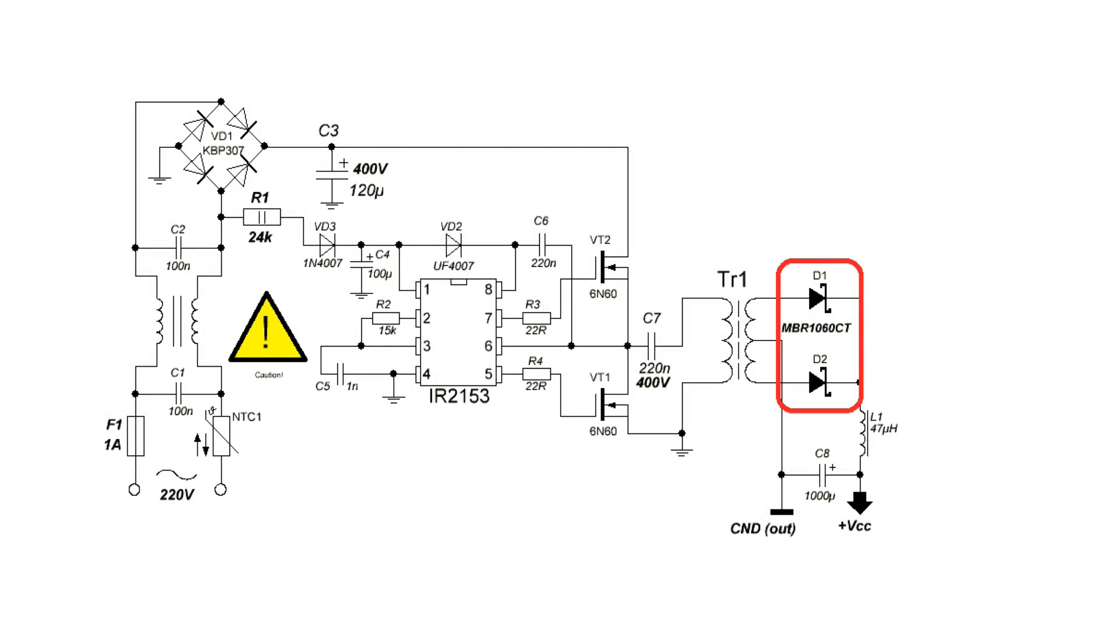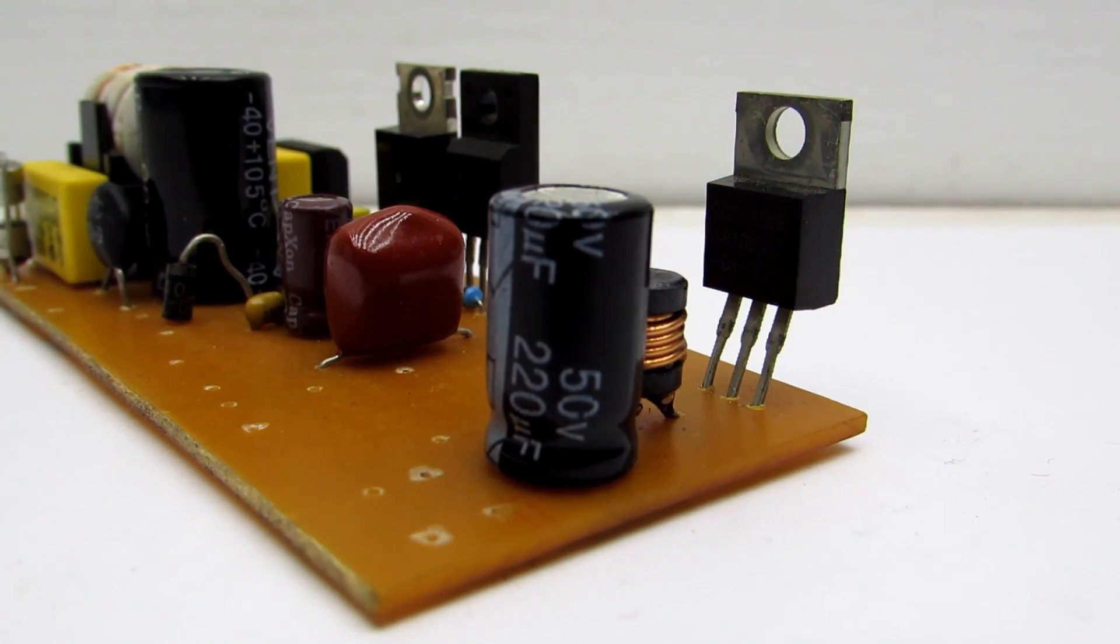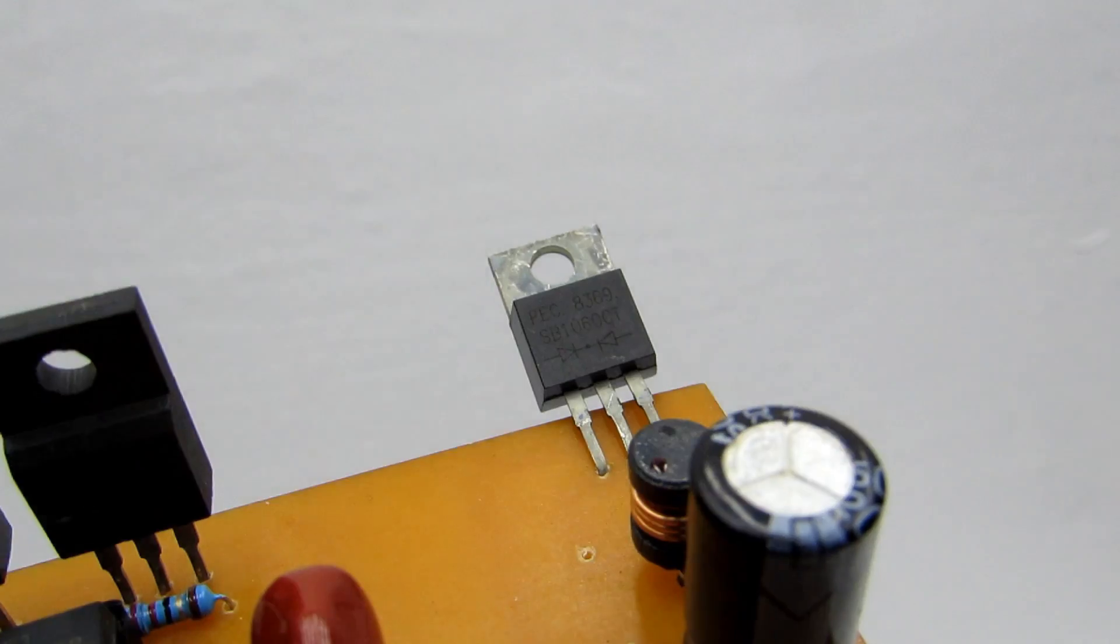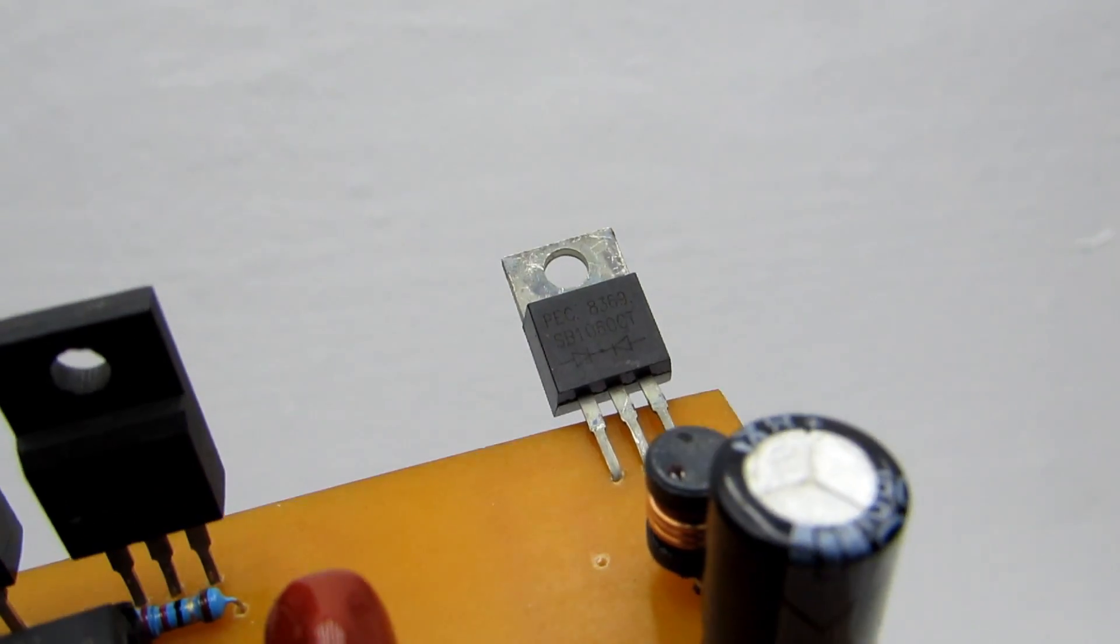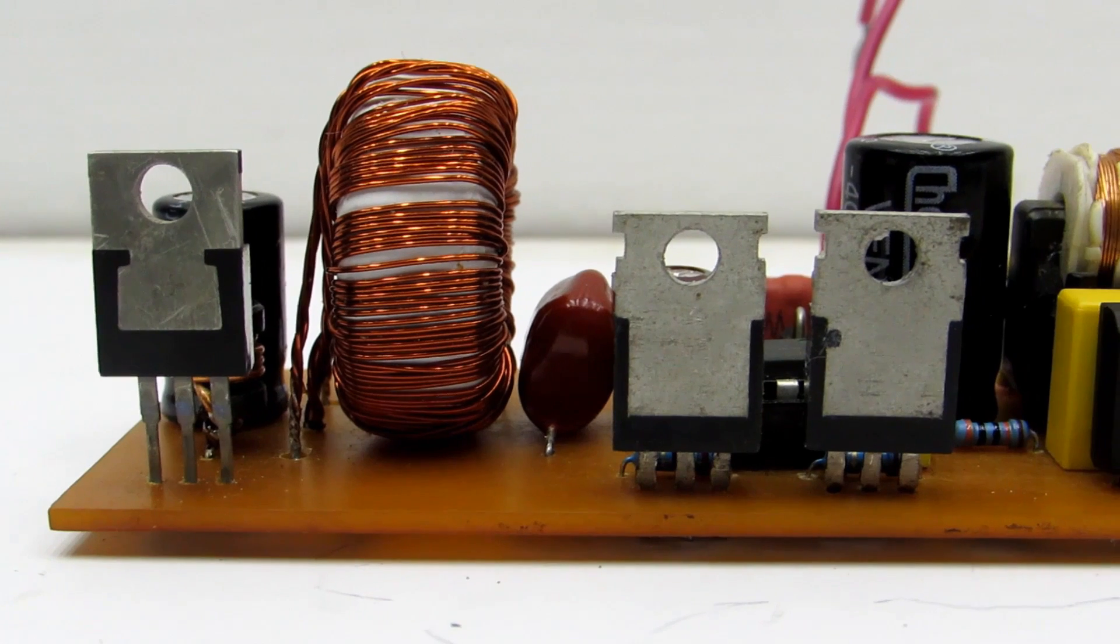At the output is used a half-wave rectifier with a midpoint, only for reduced diodes quantity. I put dual Schottky diodes in the TO220 package, with a reserve voltage of 60 volts and a current of 10 amperes, taken from a computer power supply.